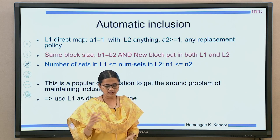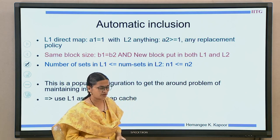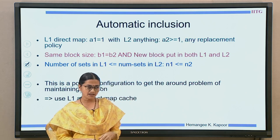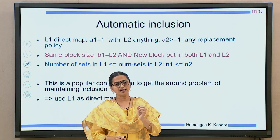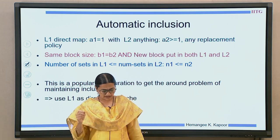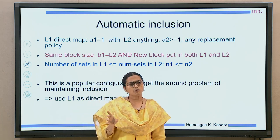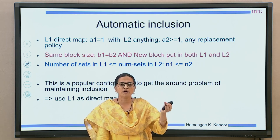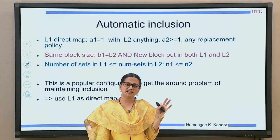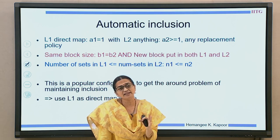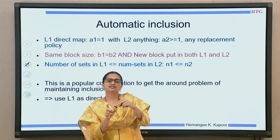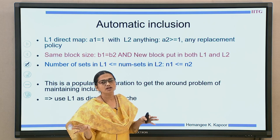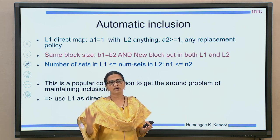In this lecture, we will see various ways of maintaining inclusion. The first thing we are going to consider is: can I maintain inclusion automatically, and if not, what extra things we need to do so that inclusion can still be maintained? The easiest way to maintain inclusion is to use L1 as a direct map cache, because set associativity of L1 creates the problem. So remove that set associativeness in L1 and make it a direct map cache. When it is direct map, it always has a single block — it either removes that block or it keeps it. There is no history-based LRU decision logic, and hence there would not be a conflict of decisions between L1 and L2.